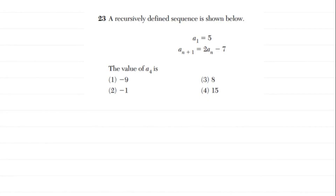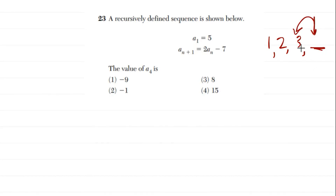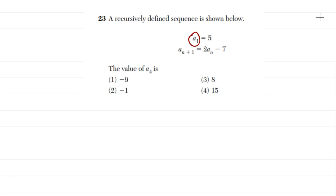Number 23 gives us a recursively defined sequence. A recursively defined sequence means that to find a particular term, you need to look at one of the previous terms. So if I had a sequence like 1, 2, 3, blank — to find that next term I'd look back at a previous term. Here, a sub 1 is 5 (our first term), and we want a sub 4. The rule tells us: the next term equals two times the current term minus seven.